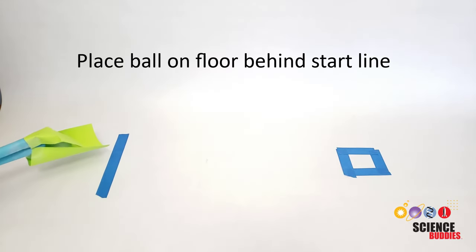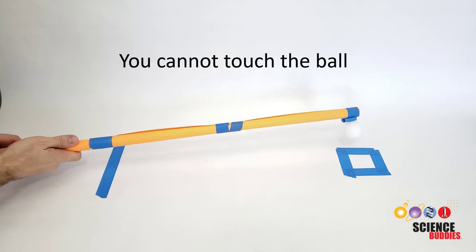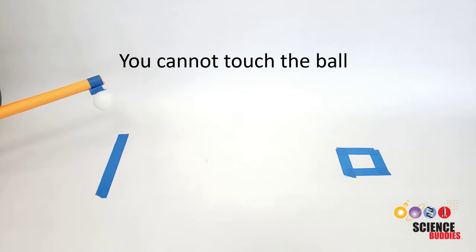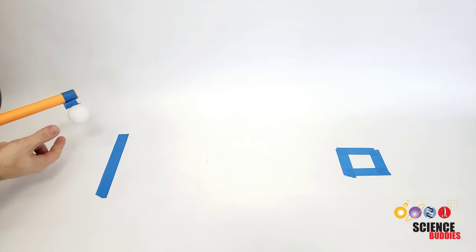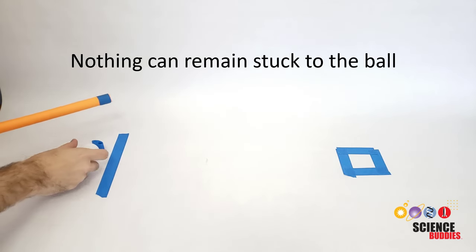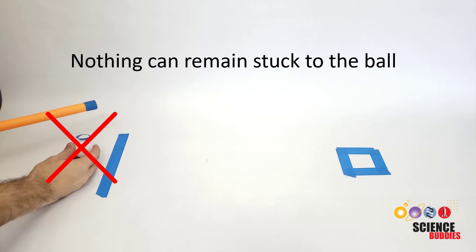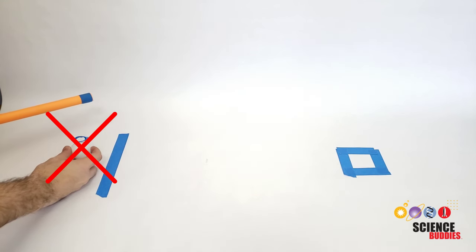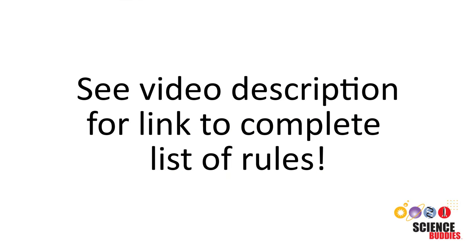You must then bring the ball back behind the start line and place it on the floor. You cannot touch the ball at any point once the trial has started, even after you have brought it back behind the start line. And finally, nothing can remain stuck or attached to the ball after it has been deposited behind the start line. Again, don't worry if you can't remember all the rules now. The complete list of rules is linked in the video description.